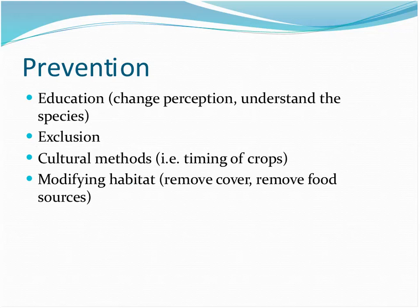Modifying habitat is usually more permanent and a little more costly. Removing cover and food sources are the cheaper parts of that. In some species it's not very applicable — I don't know what habitat would have to look like to not be friendly for a raccoon; they can live in a dumpster. Hazing or harassment is another preventive tool — chasing an animal away before it becomes a nuisance. If you make a coyote afraid of people, he may not become habituated and become a nuisance coyote later on.